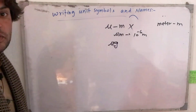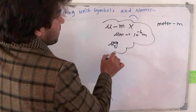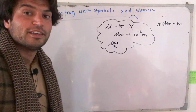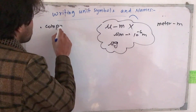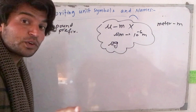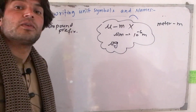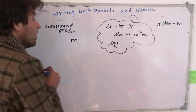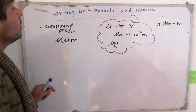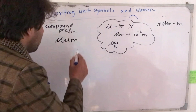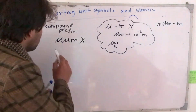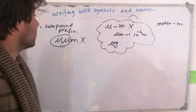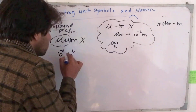This is why we need to understand what compound prefixes mean — we need to think about this clearly. For example, if you write micro-micro meter — that is not allowed. Micro-micro meter means two prefixes combined. Micro is equal to 10 to the power of minus 6, so micro-micro meter means the compound prefix, which is not allowed.